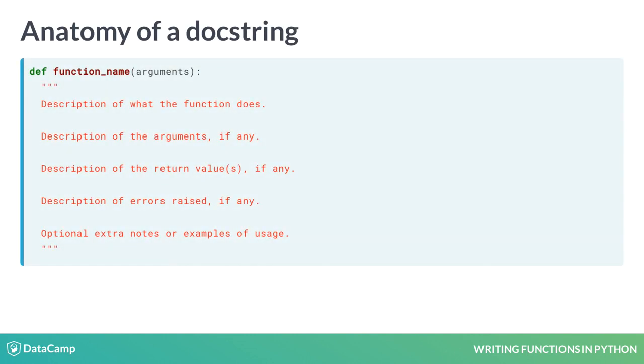A docstring is a string written as the first line of a function. Because docstrings usually span multiple lines, they are enclosed in triple quotes, Python's way of writing multi-line strings.